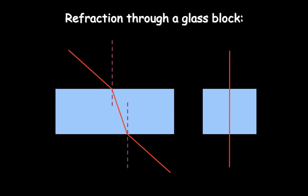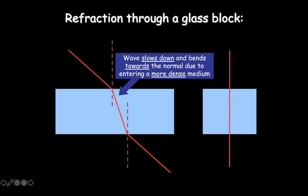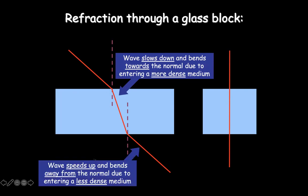This refraction only happens when light strikes the surface at an angle other than 90 degrees. If light strikes the surface at 90 degrees, no refraction occurs. The reason why refraction occurs is because light slows down as it enters inside the denser medium and hence it bends. When it moves out of glass, it picks up speed and again it bends away from the normal.